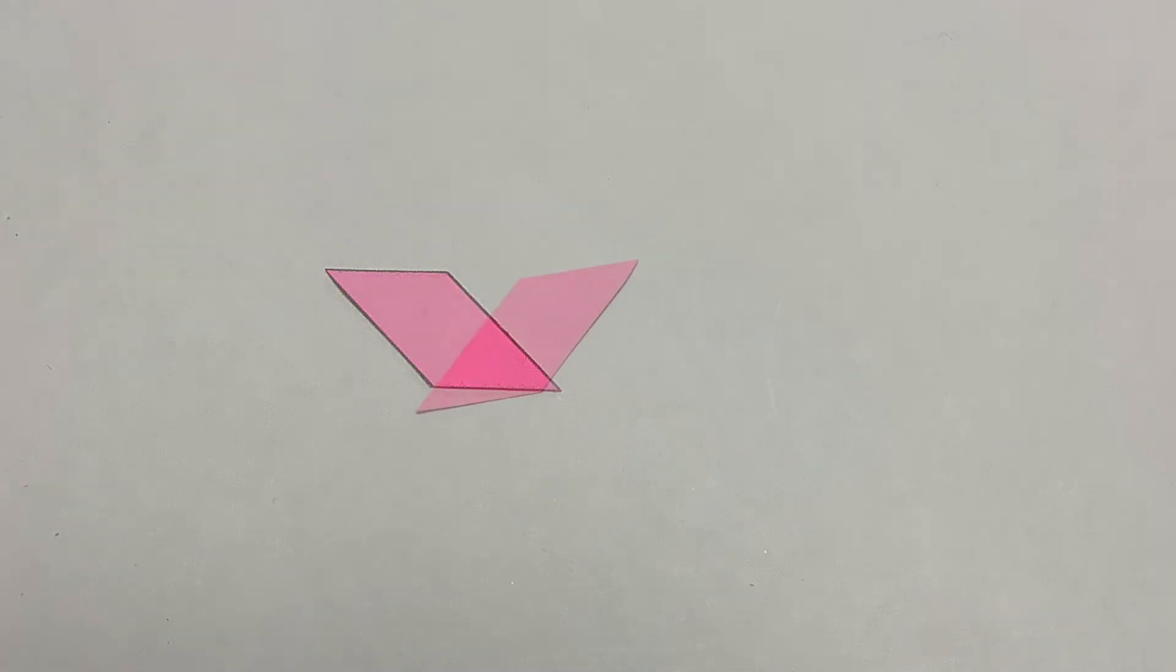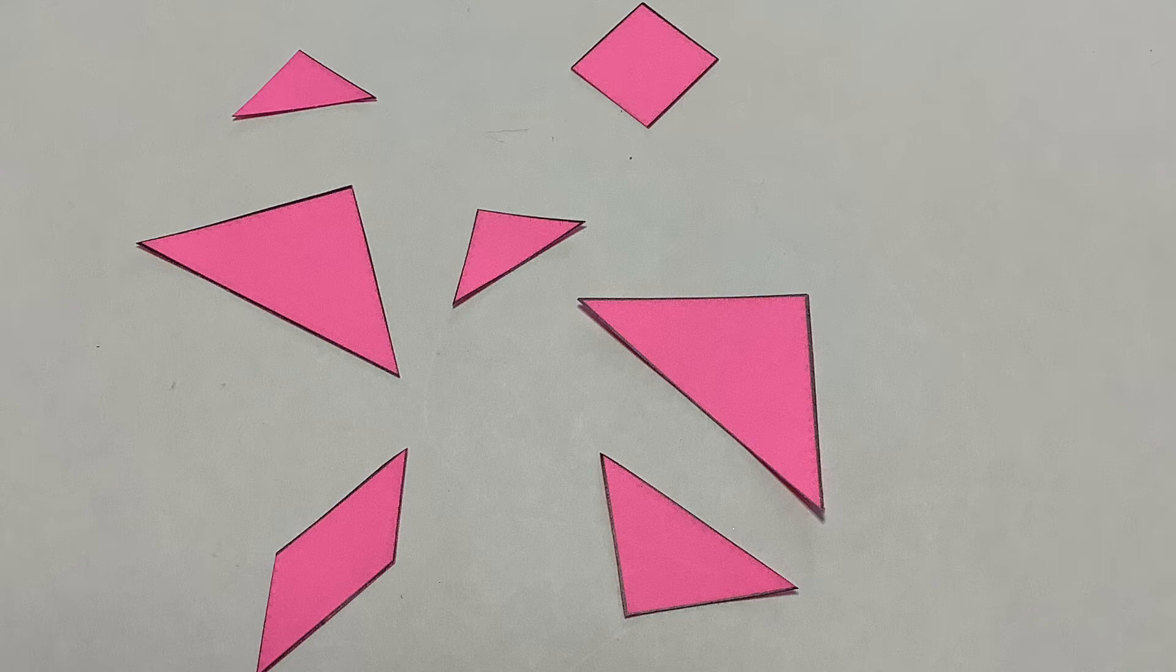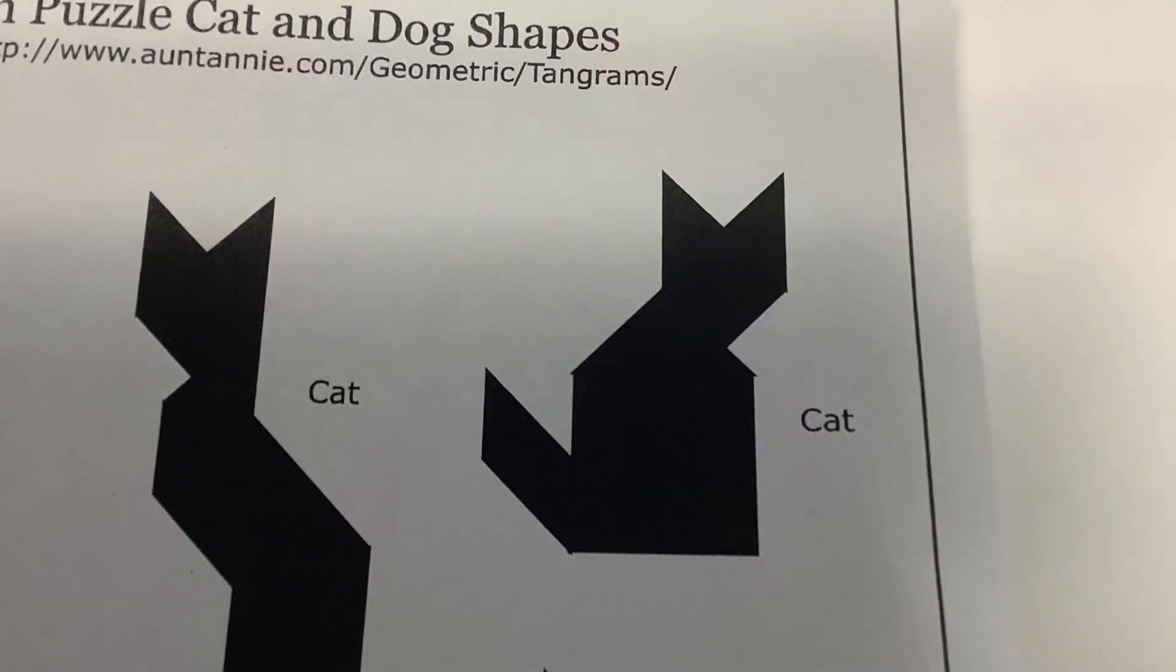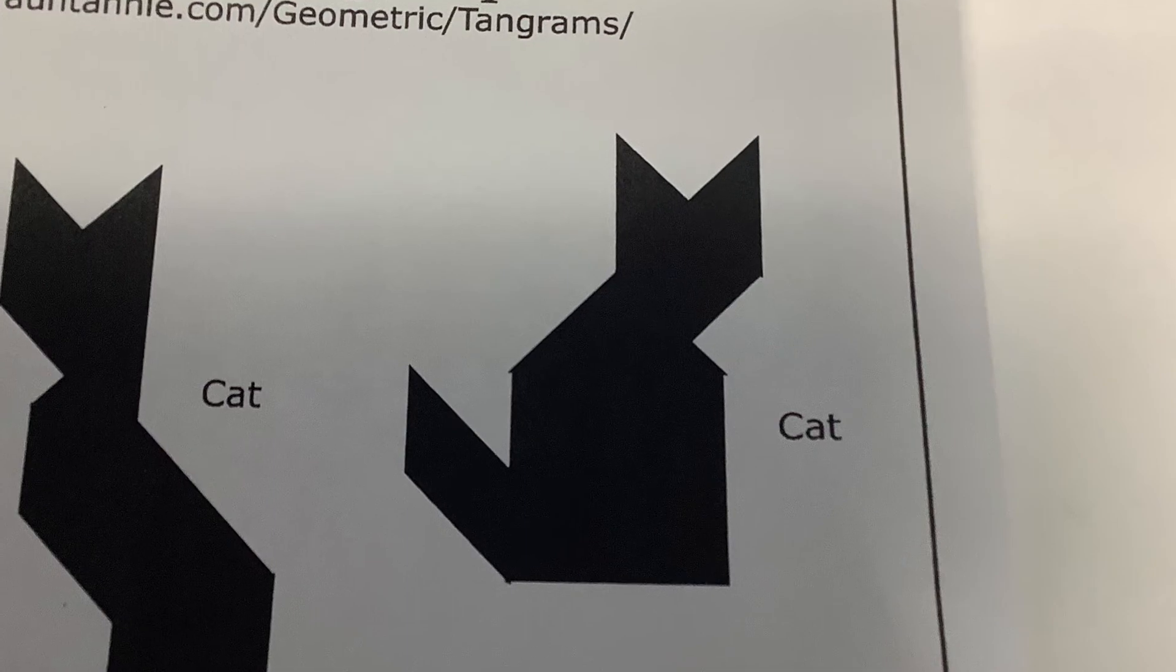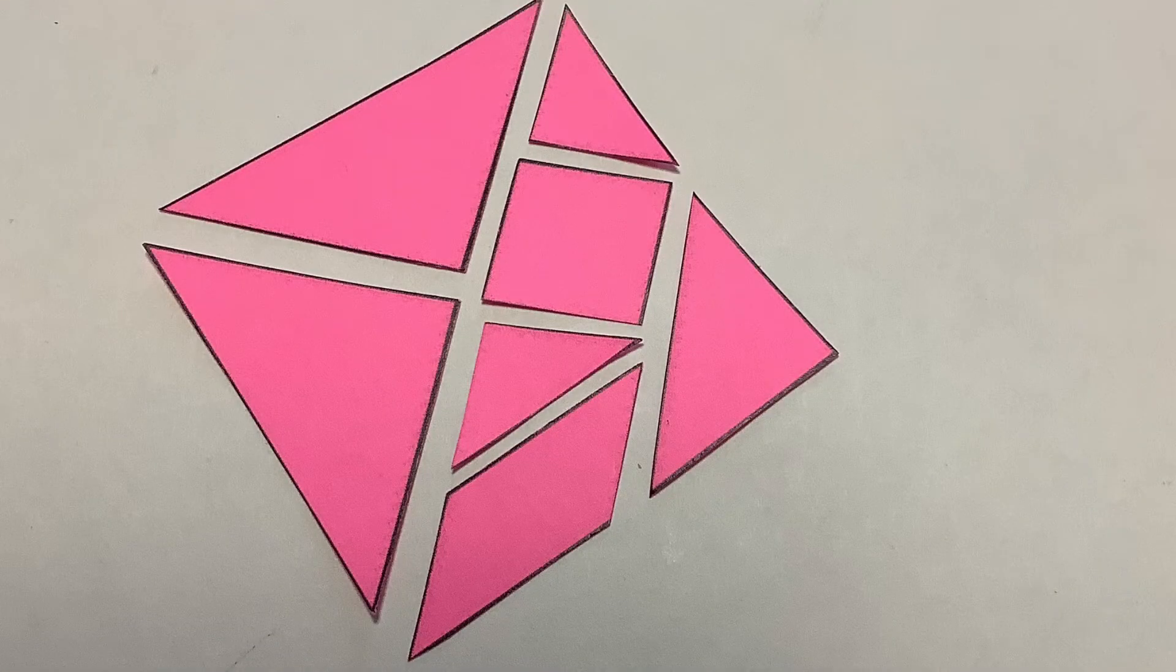We'll also take a look at two puzzles today using all seven pieces. The first one will be the cat and that one is in the cat and dog sheet. You start out with all seven pieces.